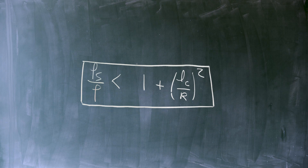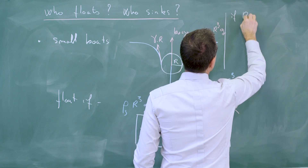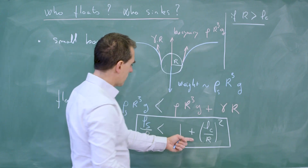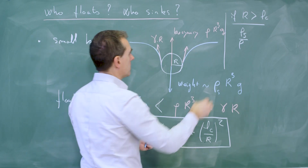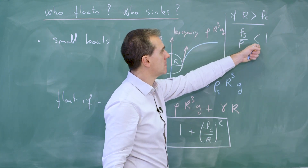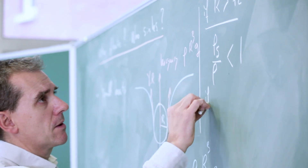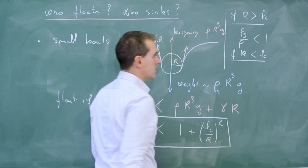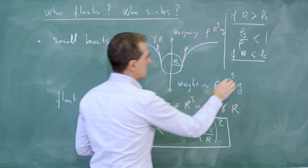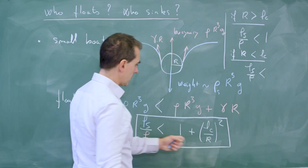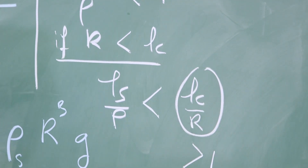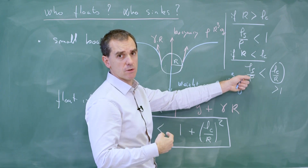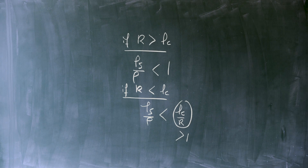The two comments we can make with this formula are the following. If the size of the particle is much larger than the capillary length, then this formula recovers the previous analysis: you will float if ρ_s / ρ is smaller than 1. But if the size becomes smaller than the capillary length, which is of the order of 3 millimeters, then ρ_s / ρ has to be smaller than something large — because Lc/r becomes larger than 1 — and so you can float even if the density of the solid is larger than the density of the water. Even with large density, you can make small objects float using this capillary effect.